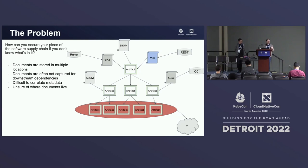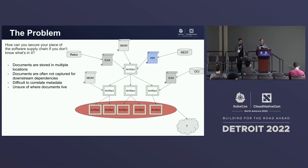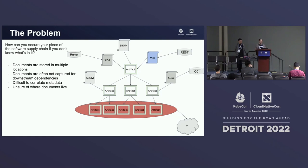Where should I look for it? Some of these things are stored in sig stores, Rekor, REST APIs, random buckets in OCI, and all sorts of places. Usually when you pull down a package you might get a SLSA attestation for that particular package, but not for its dependencies. This is similar to what we saw with Log4j, where compromised versions were really deep in your supply chain — you relied on a library which relies on a library which relies on a library that uses a compromised version.